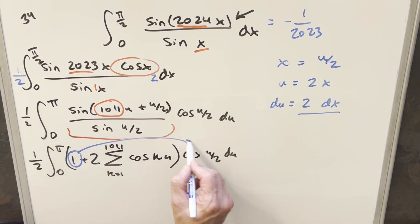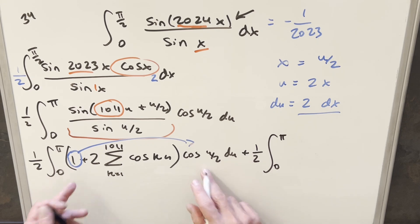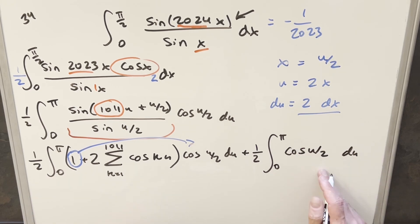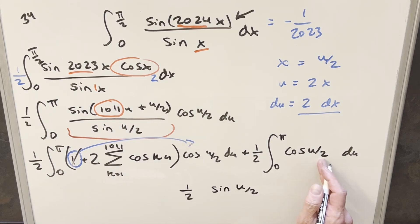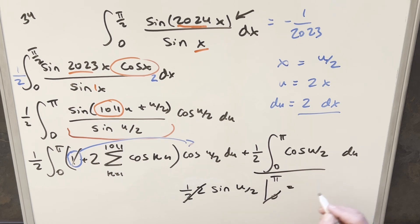What I want to do is deal with the constant term first. I can distribute the cos(u/2) over and break it off into a separate integral. Distributing the 1/2, we're integrating from 0 to π of cos(u/2) du. That's just sine(u/2), but we need to bring out a factor of 2 for the u/2 inside, which cancels with the 1/2. Evaluating from 0 to π: sine at zero is zero, sine(π/2) is one. So this piece equals 1.